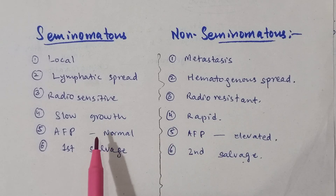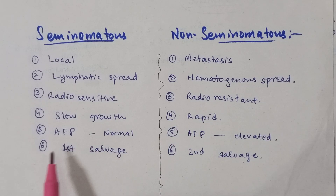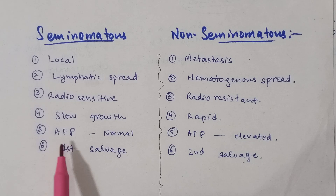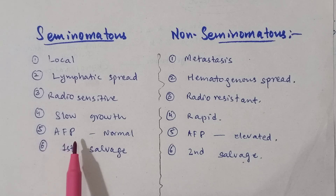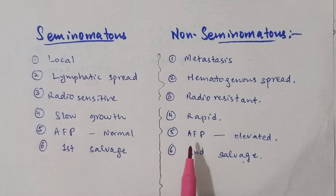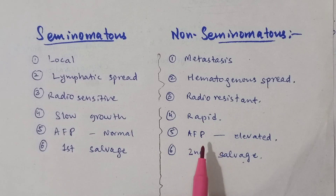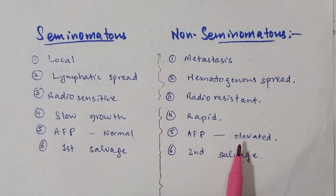Seminomatous tumours show normal alpha-fetoprotein. Alpha-fetoprotein is elevated if there is presence of a non-seminomatous tumour.